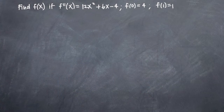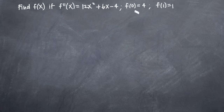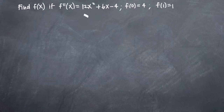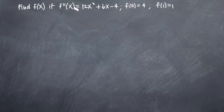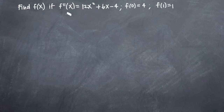In this particular problem, we've been asked to find f of x if f double prime of x is equal to 12x squared plus 6x minus 4, and given the initial conditions that f of 0 is equal to 4 and f of 1 is equal to 1. Our first step is to start with f double prime of x and take antiderivatives. We know that f of x is our original function, f prime is its first derivative, and f double prime is its second derivative, which means we'll need to take the integral of f double prime of x to get to f prime of x, and then take the integral again to get from f prime of x back to f of x.